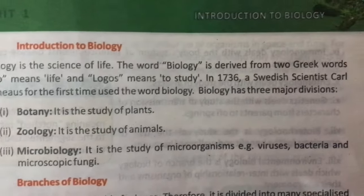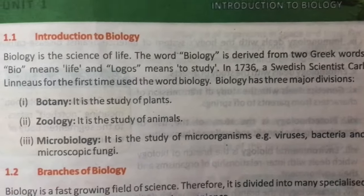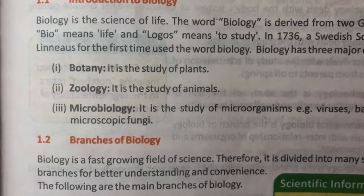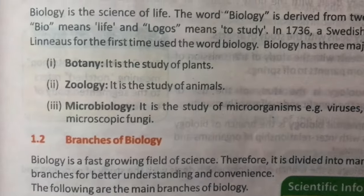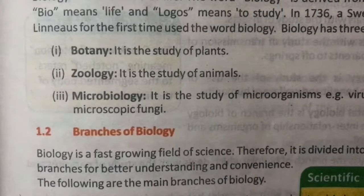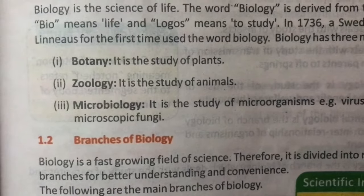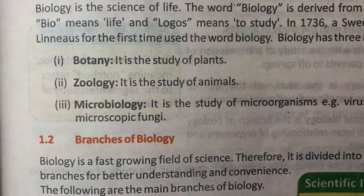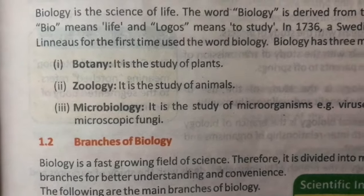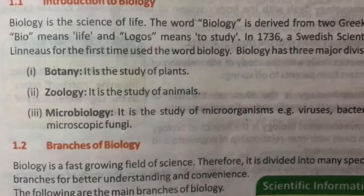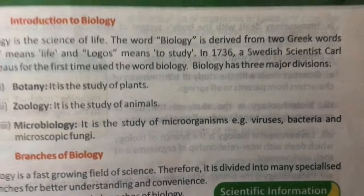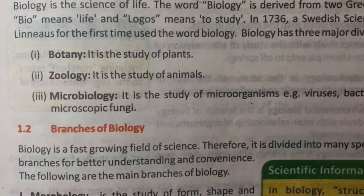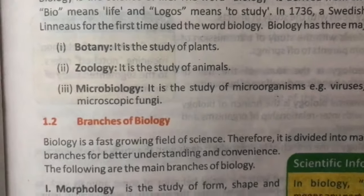Biology has three major divisions. Number one: botany — it is the study of plants. Number two: zoology — it is the study of animals. Number three: microbiology — it is the study of microorganisms, for example viruses, bacteria, and microscopic fungi.